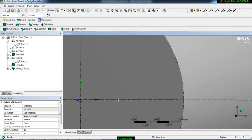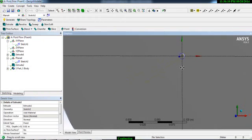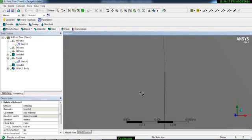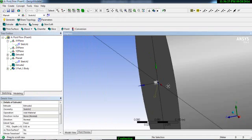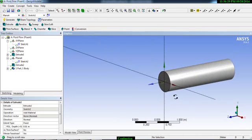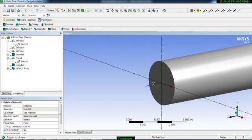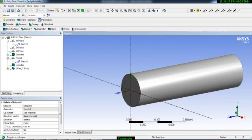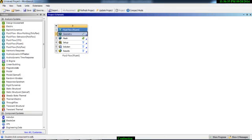Then extrude it maybe 10 millimeter, that will be more than enough, so 0.01 and generate. Now you have a very tiny little methane injector here. You can see here we have our combustion chamber and we have our methane injector. We are done with our geometry.